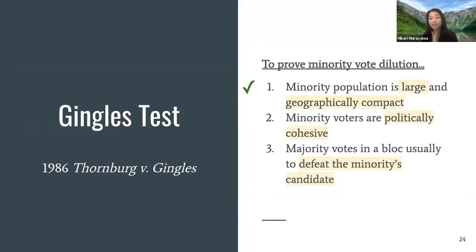We've proven that each demographic has a strong polar preference for one candidate over the other, allowing us to cross off the second point of the Gingles test. We can even run EICompare for multiple years to assess whether the minority group is cohesive throughout those years, and by proving consistency across history we have the basis to start proving point three — that the majority votes in a block to defeat the minority-supported candidate.